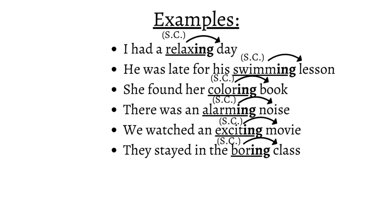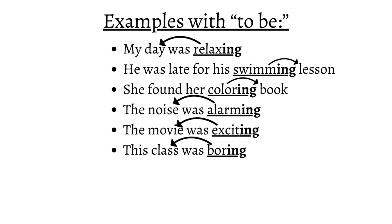The adjective "relaxing" is the subject complement that describes the day — the sentence means that the day caused me to relax. "Swimming" is the subject complement that describes the lesson. "Coloring" is the subject complement that describes the book. "Alarming" is the subject complement that describes the noise, and so on. At the same time, some adjectives can be rephrased using "to be" just like the previous examples: "My day was relaxing." "The noise was alarming." "The movie was exciting." "This class was boring."